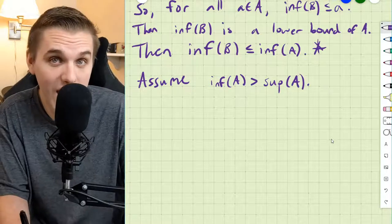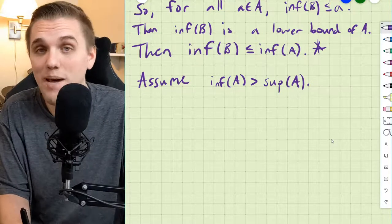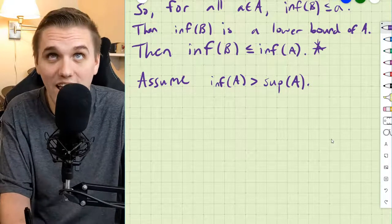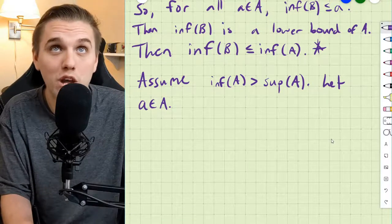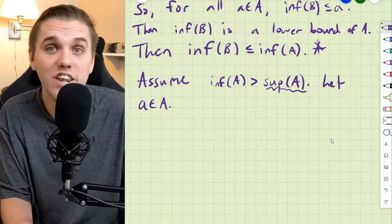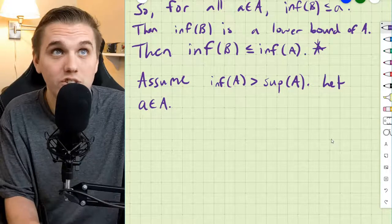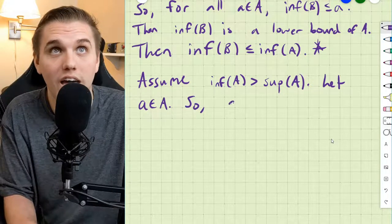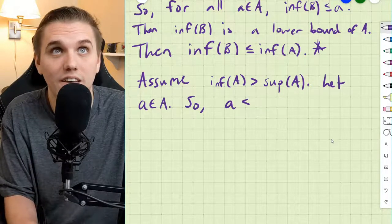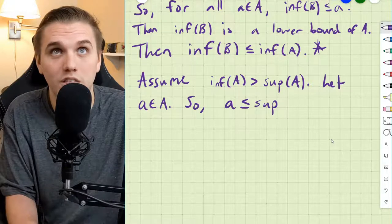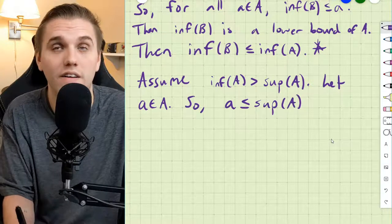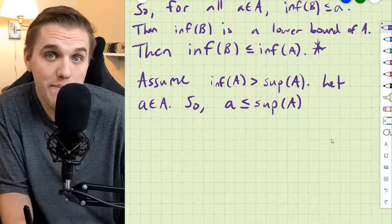Now, since A is non-empty, that means that A has an element. Now, the supremum of A is an upper bound to A. So, A is less than or equal to this upper bound right here. It's also the least upper bound, but it's an upper bound still.